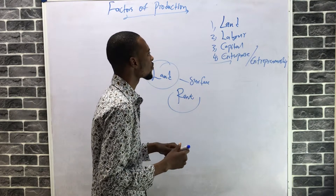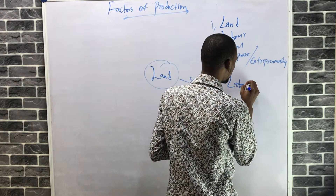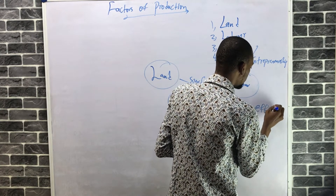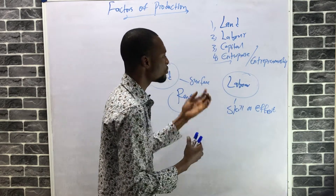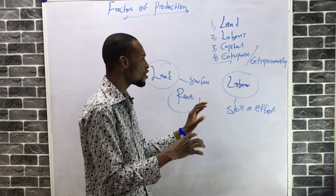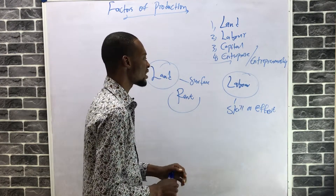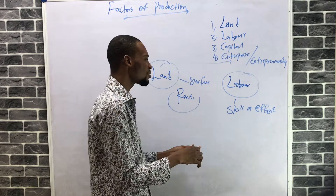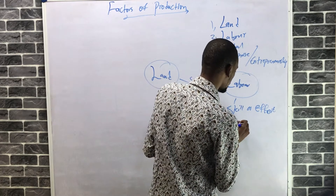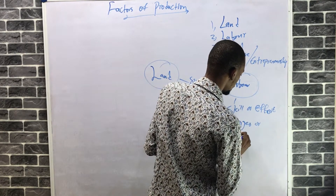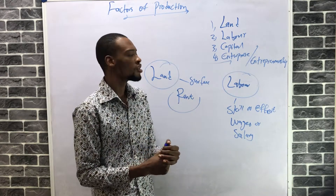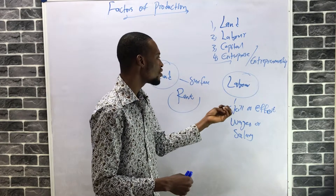Labor is the effort or skill put into production. You employ labor for production, and labor can be skilled or unskilled. Any effort or skill that is put in to complete production is labor. The reward for labor is wages or salary — when you hire laborers to partake in the production process, you have to pay them wages and salary.